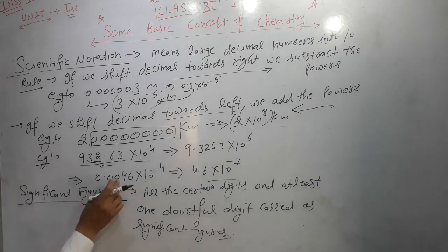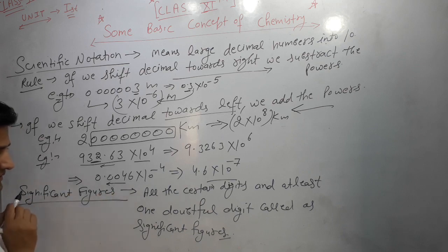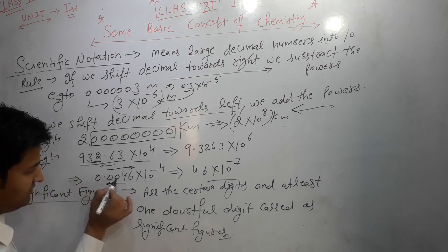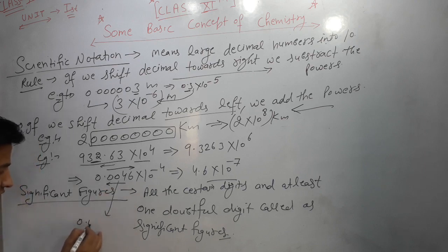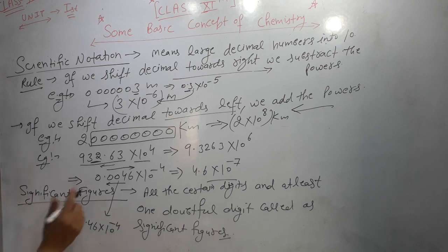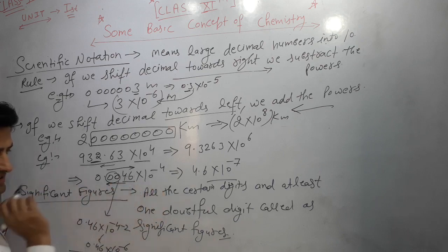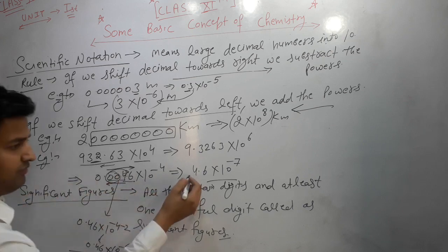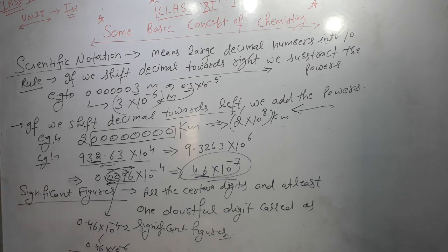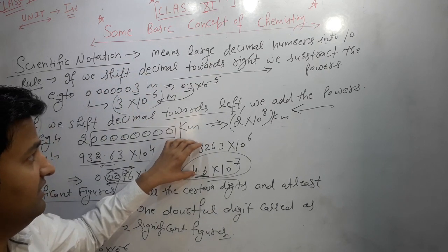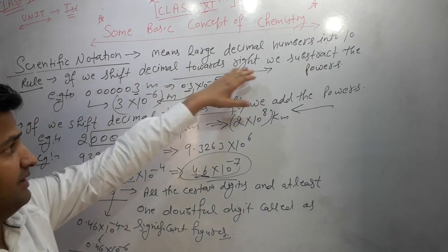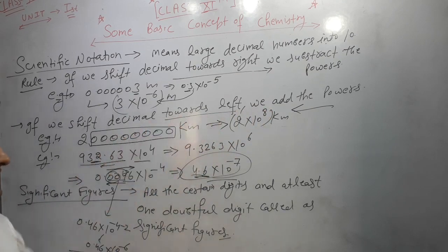Another example: 0.0046 × 10⁻⁴. If we shift the decimal two places to the right to get 0.46, we subtract 2, giving 0.46 × 10⁻⁶. If we go to 4.6, we shift three places to the right giving 4.6 × 10⁻⁷. So a large quantity can be written in powers of 10 — subtract the power when shifting right, add when shifting left.